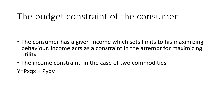We know that even though all our wants are unlimited, our income is limited. We have to allocate our income to different uses, giving first priority to first preference and so on. The consumer has a given income which sets a limit to his maximizing behavior — income acts as a constraint. The income constraint is given as Y = PxQx + PyQy, where Px is the price of commodity X, Qx is the quantity demanded of X, Py is the price of commodity Y, and Qy is the quantity demanded of Y.